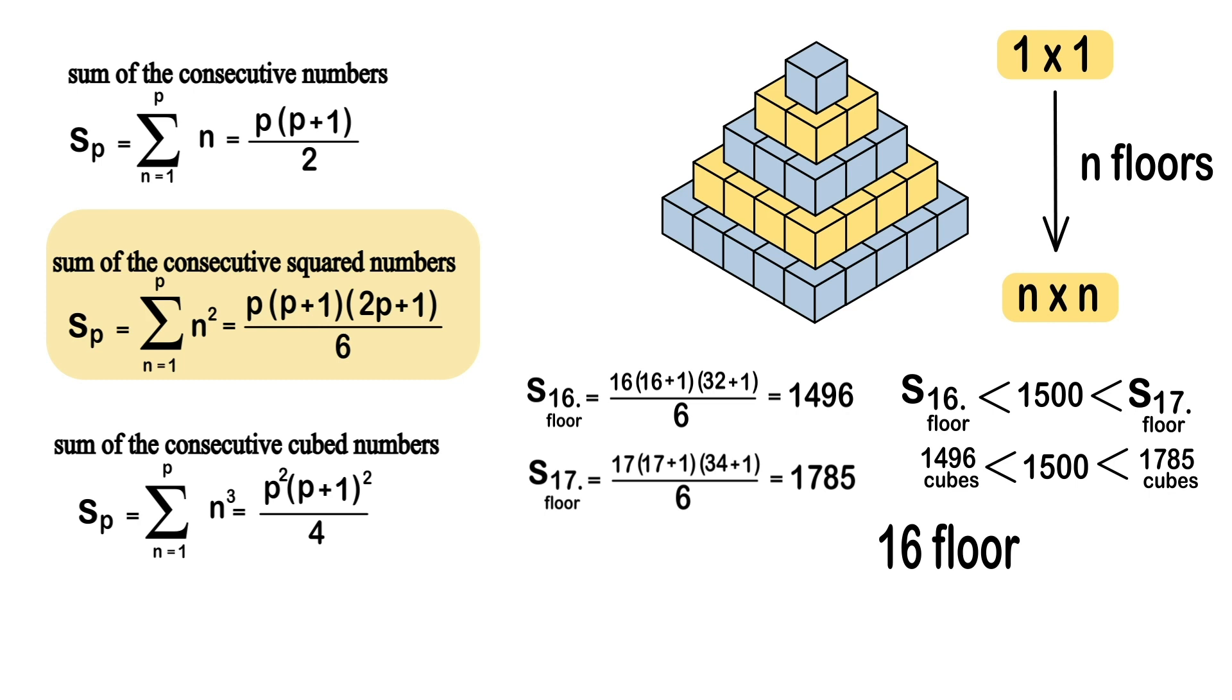The number of cubes to be left unused will then be 1500 minus 1496 after the highest possible pyramid has been built. So, from this, 4 is the solution.